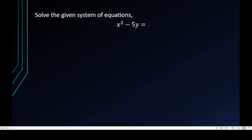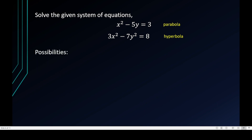We have to solve the given system of equations: x squared minus 5y equals 3, which is clearly a parabola — it has only one term with a degree of 2. Then we also have 3x squared minus 7y squared equals 8. There are two terms of degree 2, so it could be a circle, ellipse, or hyperbola. But notice the coefficients 3 and negative 7 are opposite in sign, so this is a hyperbola.